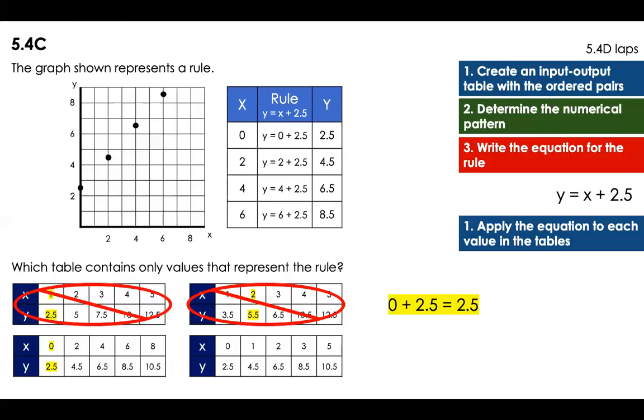0 plus 2.5 is equal to 2.5? Yes. 2 plus 2.5 is equal to 4.5? Yes. 4 plus 2.5 is equal to 6.5? Yes. 6 plus 2.5 is equal to 8.5 and 8 plus 2.5 is equal to 10.5. So yeah, this was my answer.